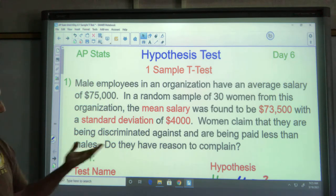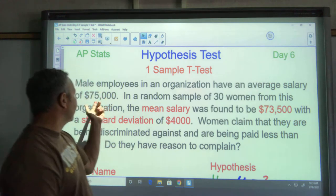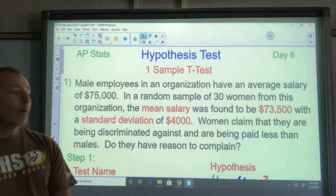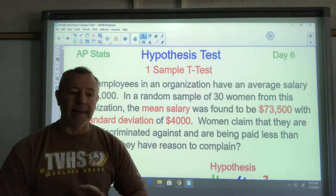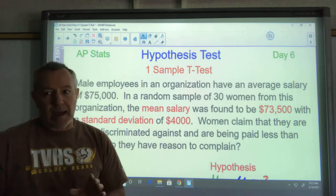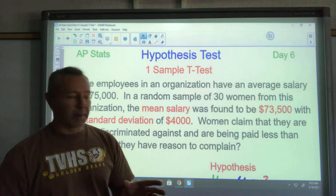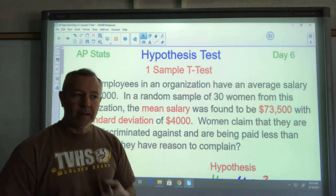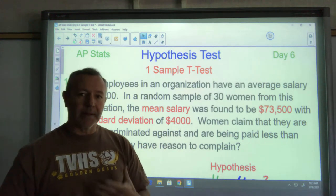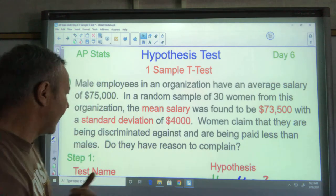The basic idea is we know the men make seventy five thousand. The women, we take a sample, they make less than that. But what's the chance? I would get a different result every time I take a different sample, probably different women. So is that just by chance or is that a significant difference that we can say that women make less than men? That's what we're doing here.